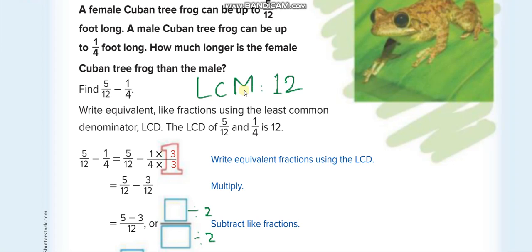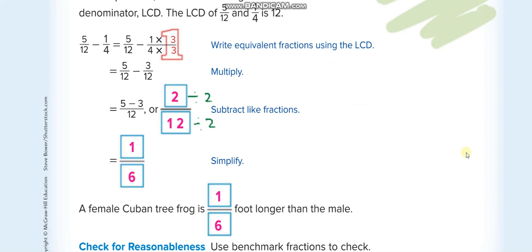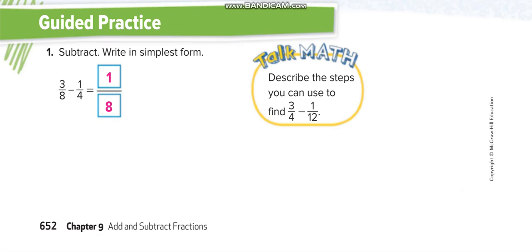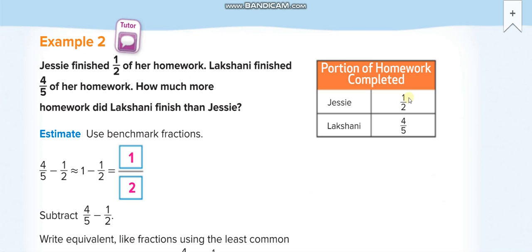There is a whole lesson on how to find the LCM, so if you forgot, you can watch that video again. The LCM of 12 and 4 is 12. The first denominator is already 12, so it stays the same. For the second fraction with denominator 4, we multiply by 3 to get 12 — and whatever we multiply on the bottom, we must multiply on top too. The denominator stays the same: 5 minus 3 equals 2 over 12, then we simplify by dividing by 2, giving us 1 over 6.